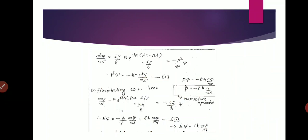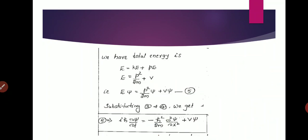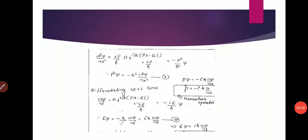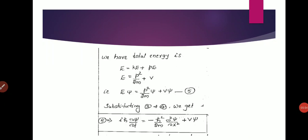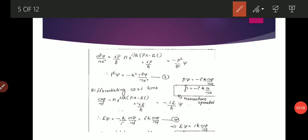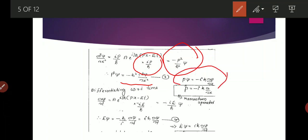Taking the second partial derivative ∂²ψ/∂x² gives (ip/ħ) applied again, yielding (ip/ħ)² · ψ = −p²/ħ² · ψ. Therefore p²ψ = −ħ² · ∂²ψ/∂x², or equivalently pψ = −iħ · ∂ψ/∂x. So the momentum operator p̂ = −iħ · ∂/∂x.